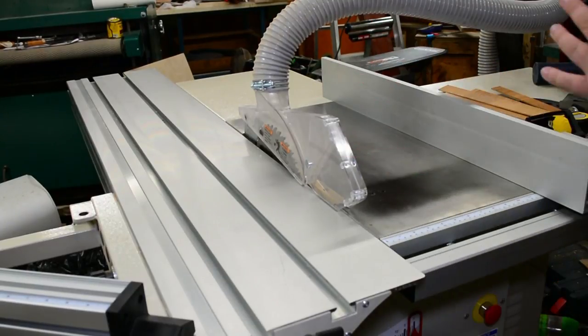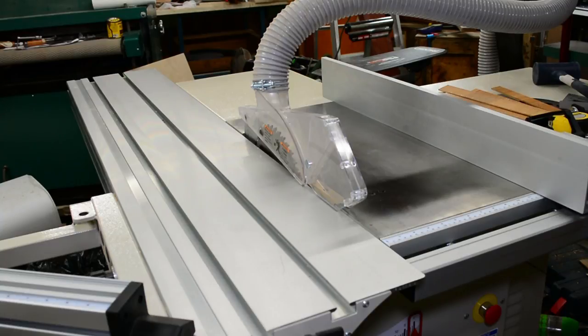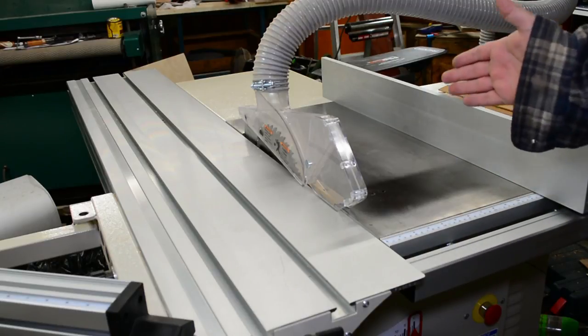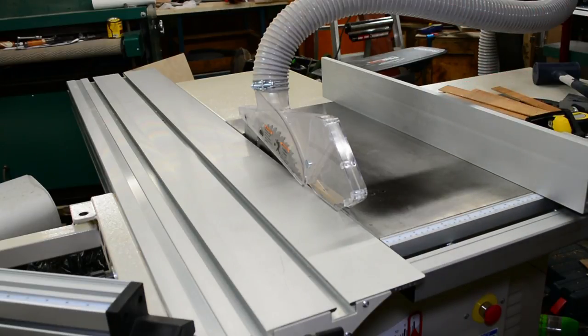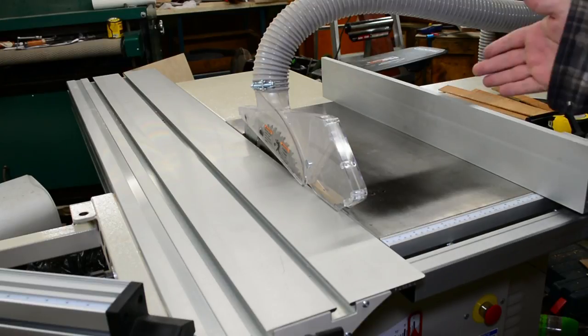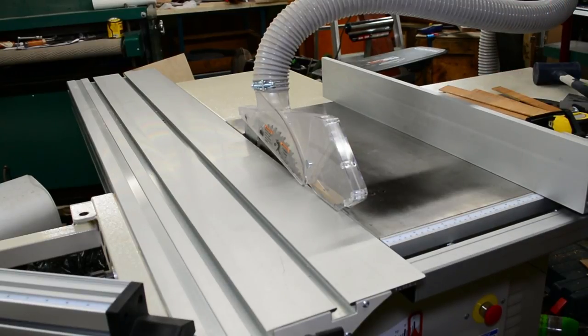So now that I went through the dislikes, here are some of the likes I have for the table saw. I love the motor. It's a five horsepower motor. I have run three inch oak through this thing and it has not bogged down at all. Motor is a beast. This thing will handle anything you throw at it, as long as it has a good blade of course. Love this motor.